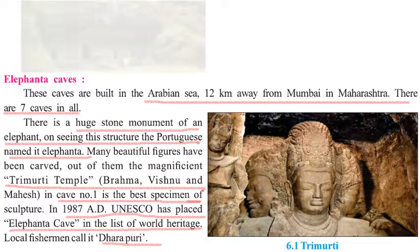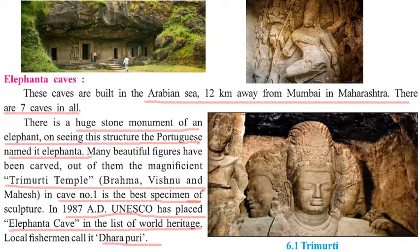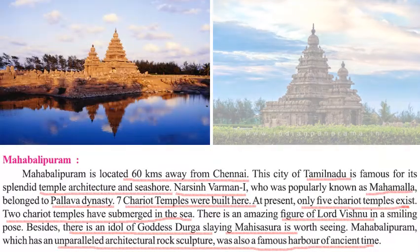Next, we will talk about the Elephanta Caves. These caves were built near Mumbai in the Arabian Sea, about 12 kilometers away, on an island. There are seven caves. There was a huge stone monument of an elephant at the entrance; today that monument has been shifted to a museum. The Portuguese named these caves 'Elephanta,' while local fishermen called the place Dharapuri. The main attraction is the Trimurti — Brahma, Vishnu, and Mahesh — in cave number one. In 1987 AD, UNESCO placed the Elephanta Caves on the list of World Heritage Sites.